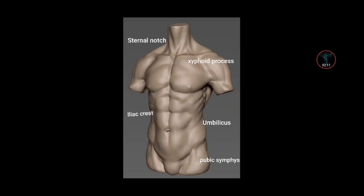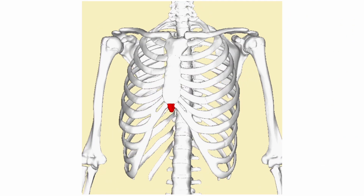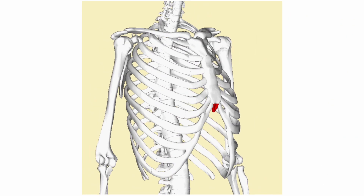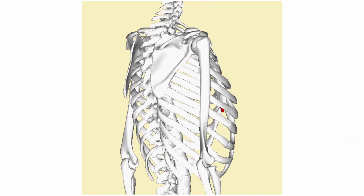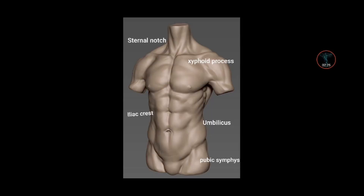Our next landmark is the xiphoid process. The xiphoid process is the cartilaginous section at the lower end of the sternum, which is not attached to any rib.